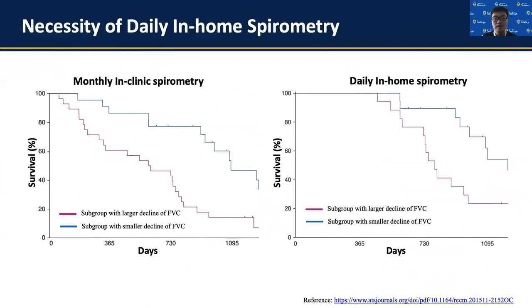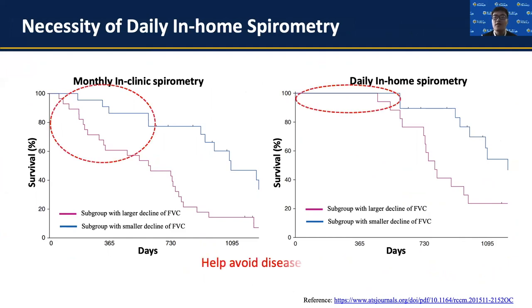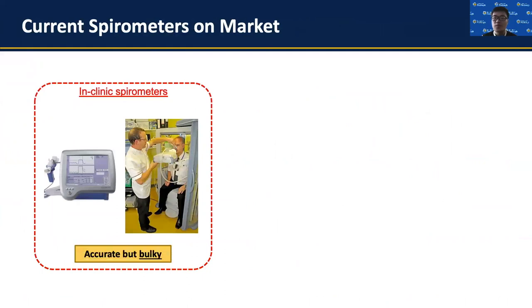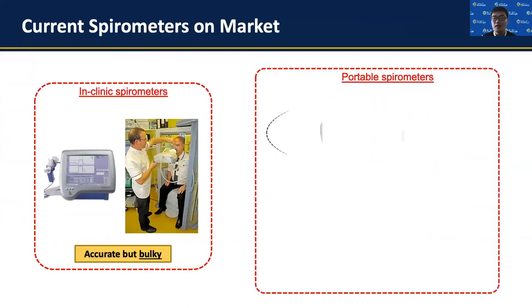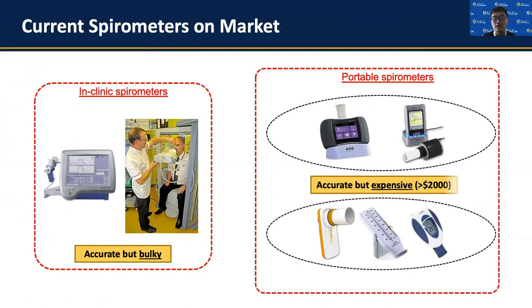Spirometry needs to be conducted daily by patients themselves at home to better track disease progression. A three-year study shows the progression difference between monthly and daily spirometry — frequent spirometry can greatly improve the survival rate as it detects abnormal changes in lung function so that patients can seek timely medication. However, current spirometers used in clinics are too bulky for daily in-home use. Portable clinical-grade spirometers are too expensive, and low-cost mobile spirometers on the market can have errors as high as 20%.